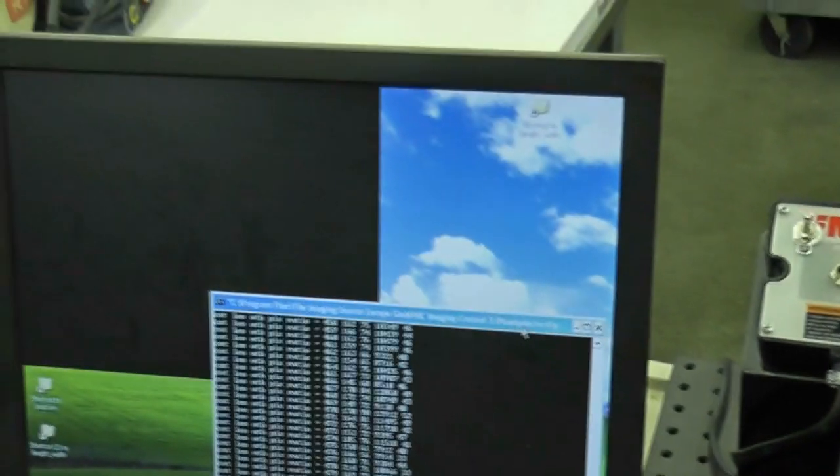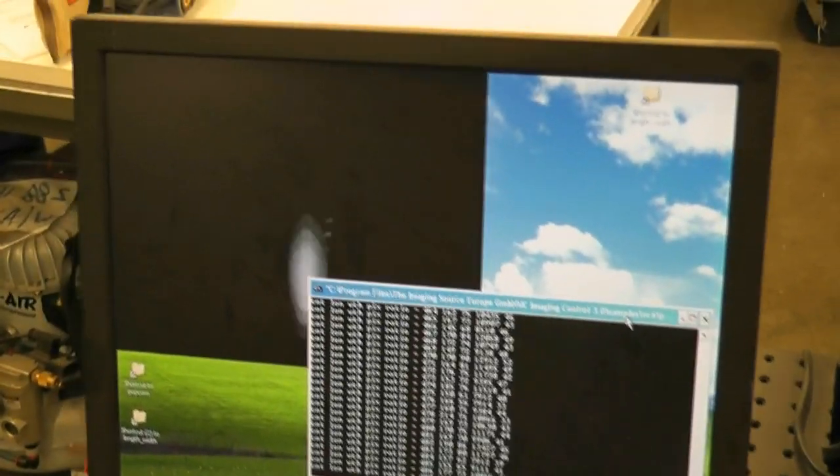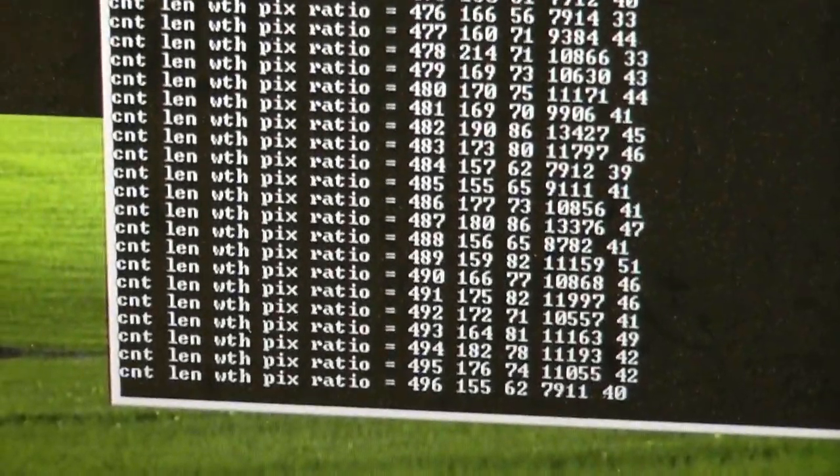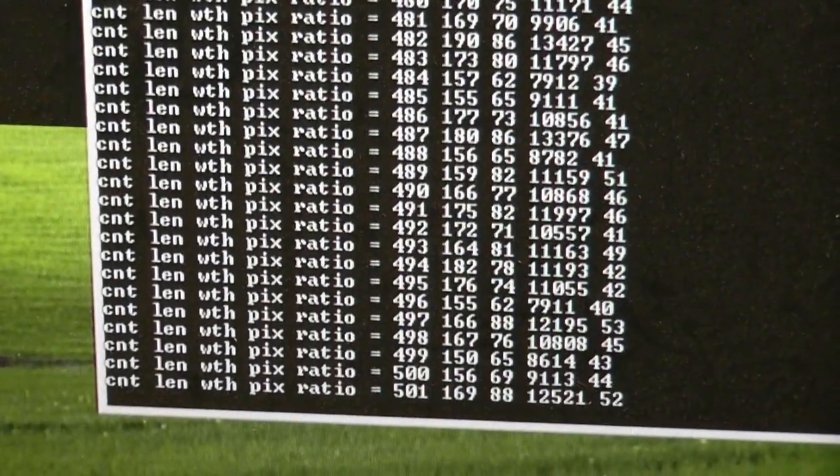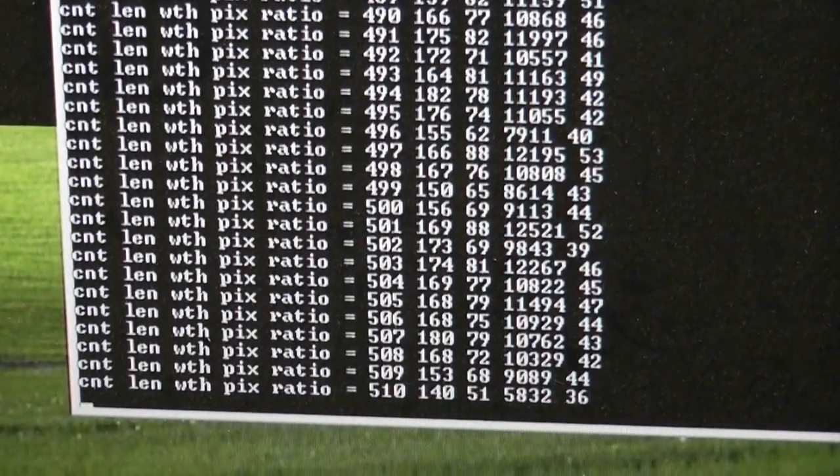You can see here, I'm getting images and data of the kernels. So that's length and width in the area of the kernel and the width or length ratio there on the far right.